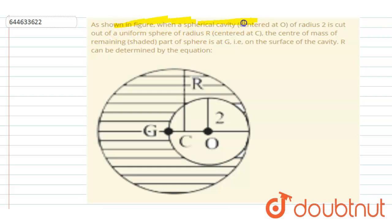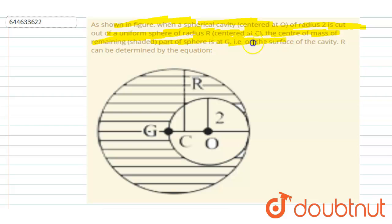As shown in the figure, when a spherical cavity of radius 2 is cut out of a sphere of radius r centered at c, the center of mass of the remaining part of the sphere is at g, on the surface of the cavity. r can be determined by the equation.